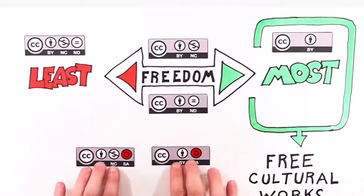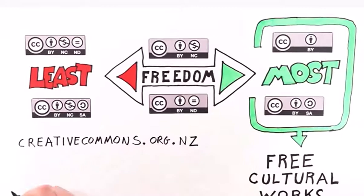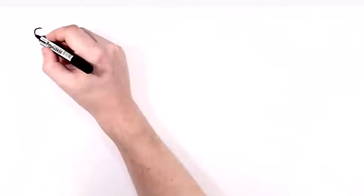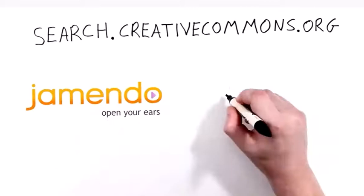To choose and apply one of these licenses and to view their terms in more detail, visit creativecommons.org.nz — or you can answer some questions to help decide which license best suits your needs at creativecommons.org/choose. There are some good ways to find other people's Creative Commons licensed work online. You can use a search filter by going to the Creative Commons website. Try the Jamendo website for music, Flickr for images, or Digital NZ for New Zealand content.